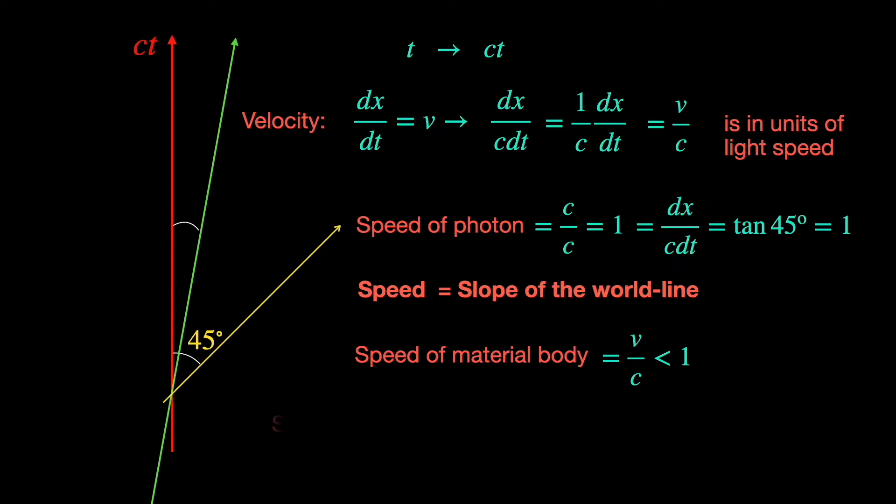If the relative speed of an observer is zero, then he obviously is in the rest frame S0 itself, and his world line has zero slope and coincides with the rest frame time axis.